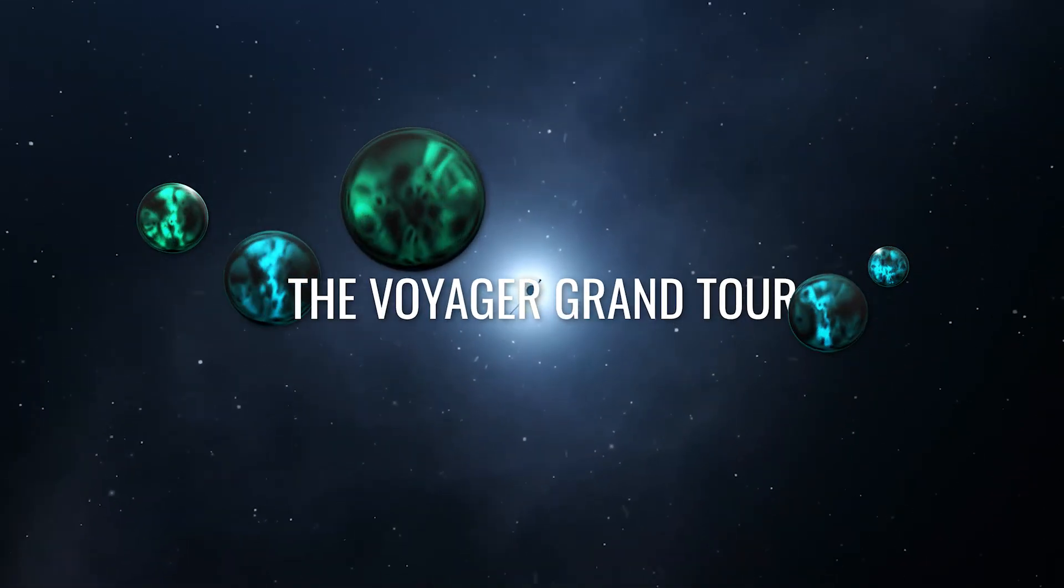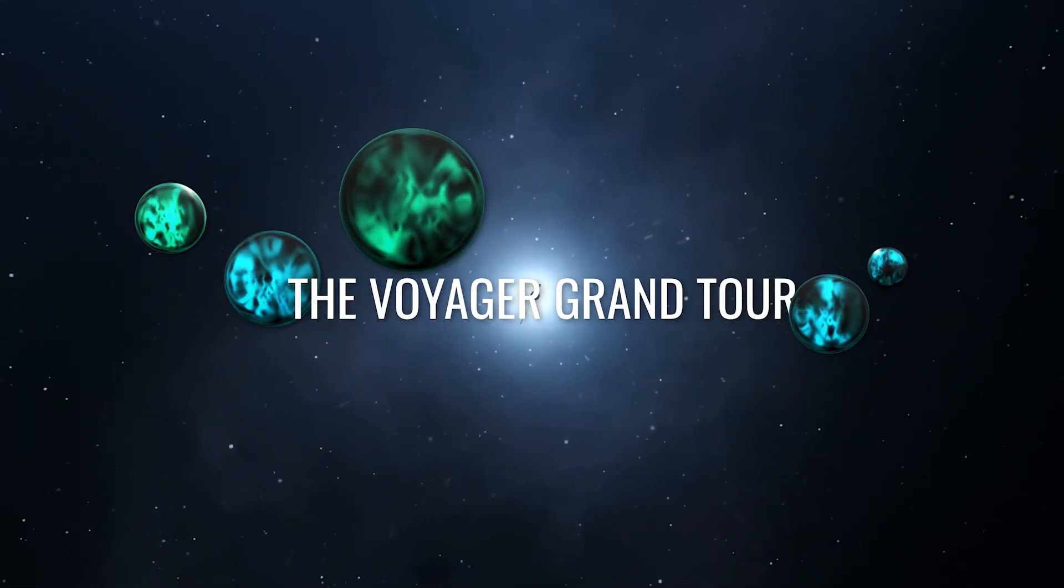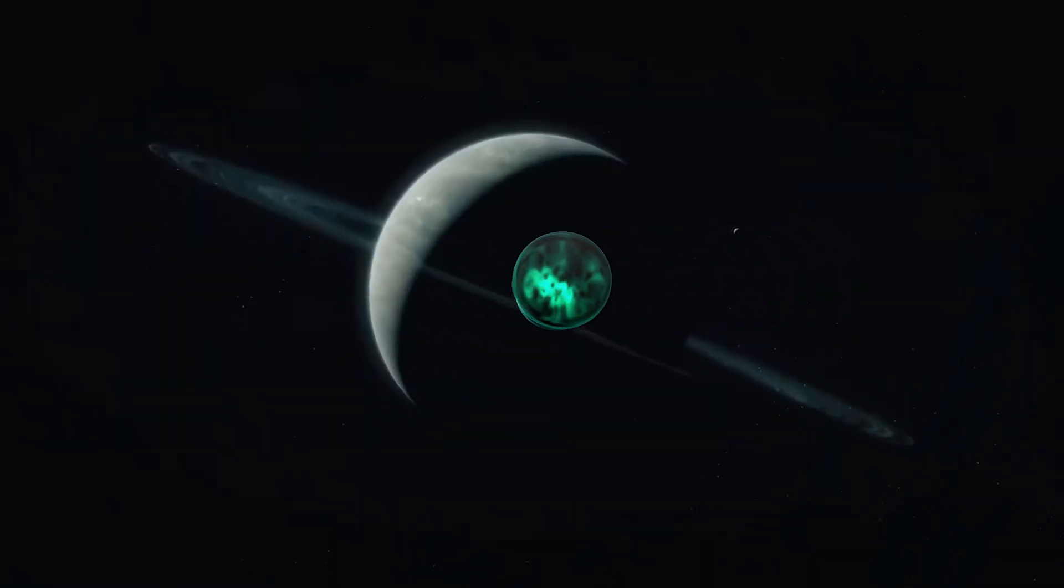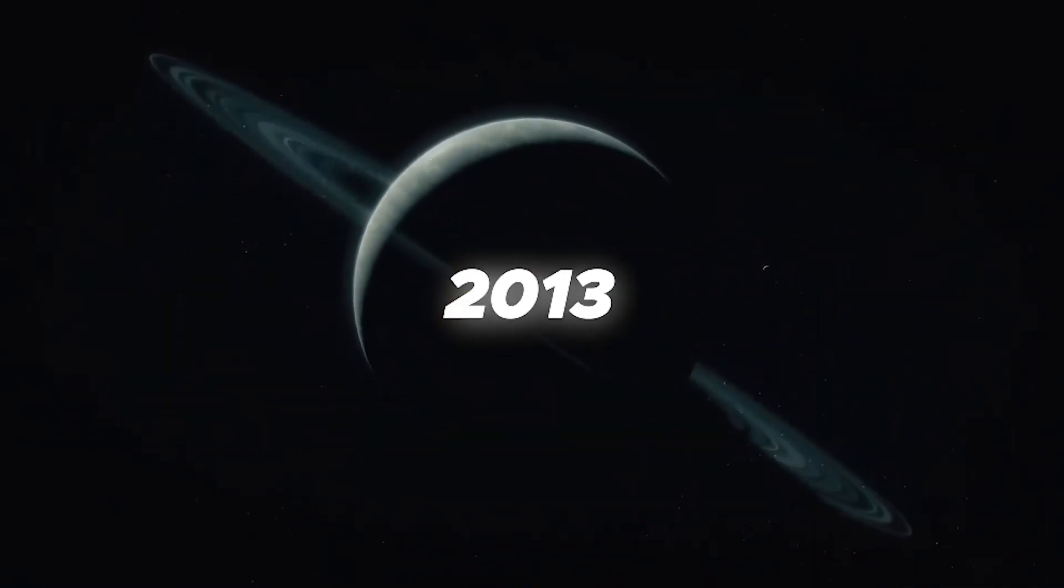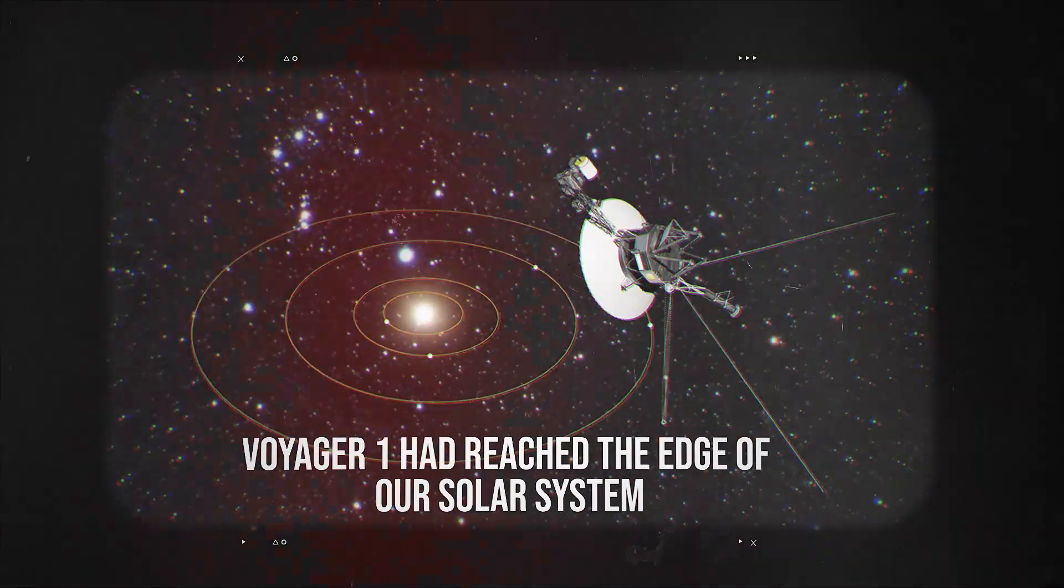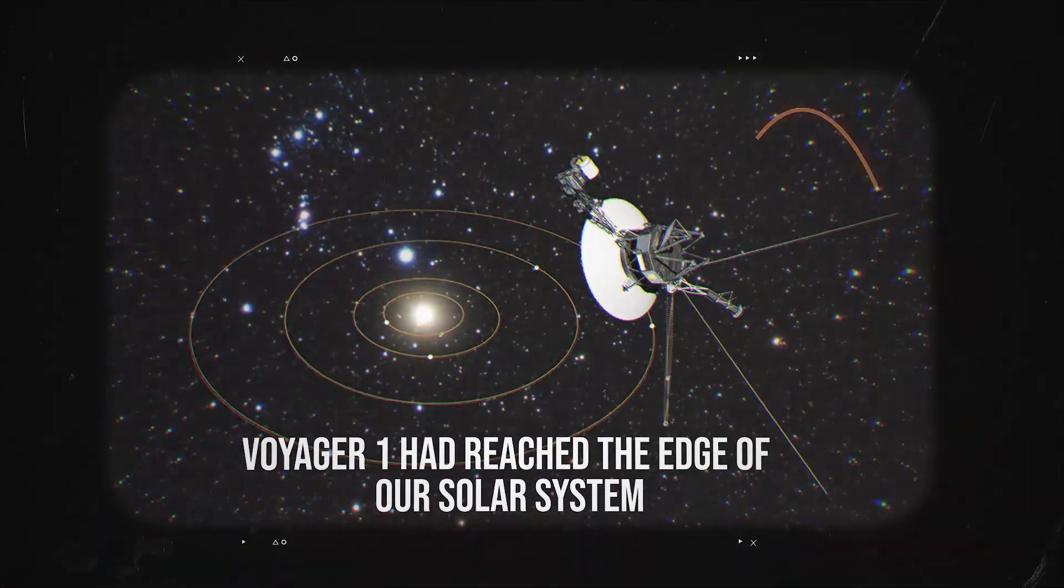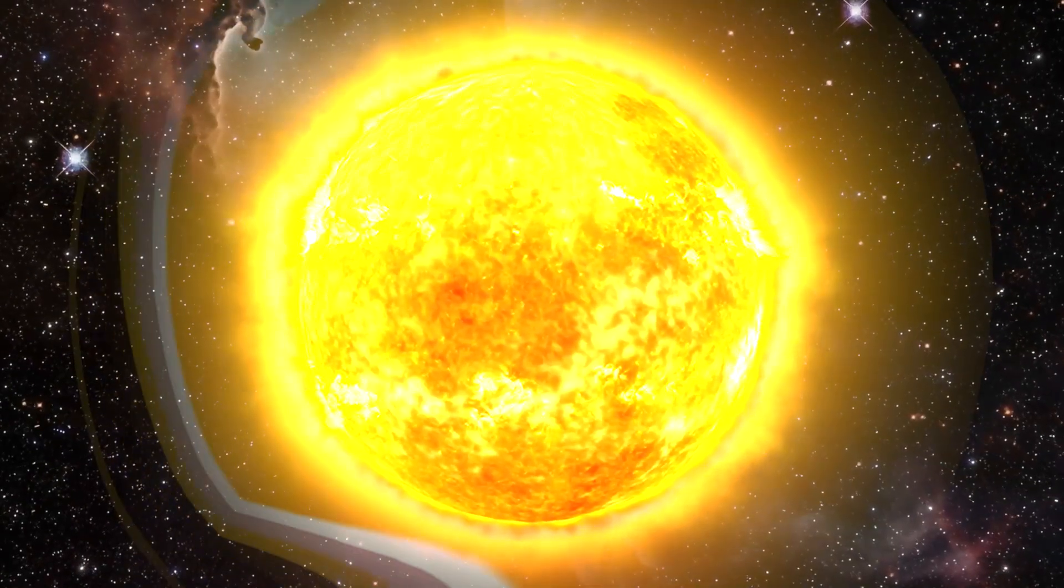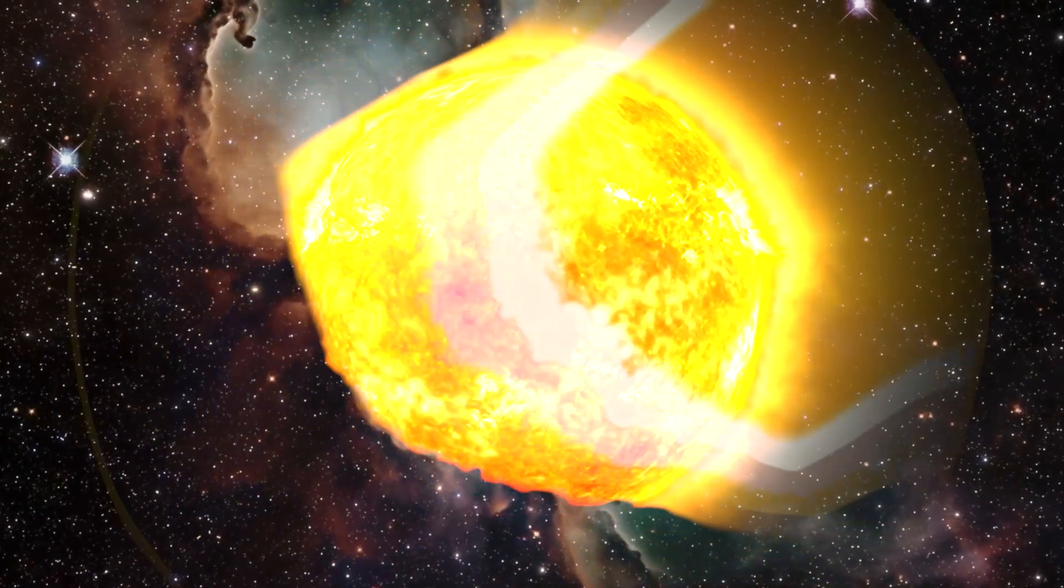After completing this mission, the spacecraft continued their journey to explore even further into space. In 2013, NASA announced that Voyager 1 had reached the edge of our solar system and entered into interstellar space, the region between stars where the Sun's influence ends.